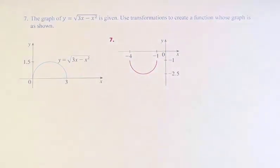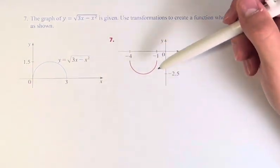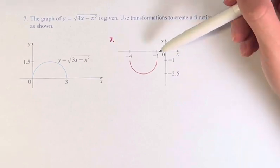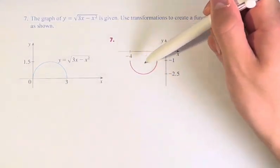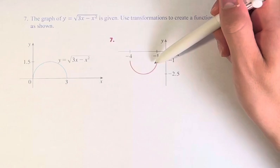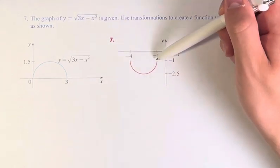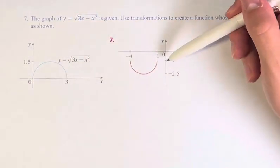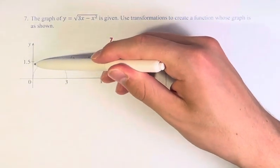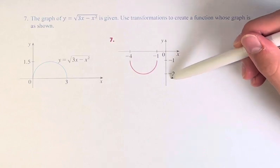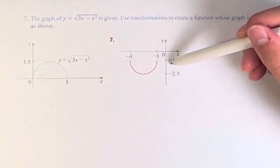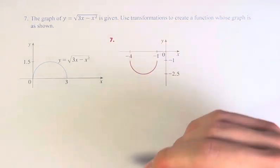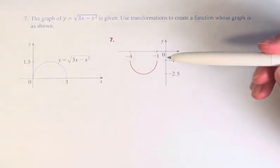So in looking for the transformations, we can see that it has not been stretched horizontally or vertically, or shrunk. The distance between the two furthest points on the x-axis is 3. From negative 1 to negative 4 is 3, just like 0 to 3 is 3. And vertically, 0 to 1.5 is 1.5 units. Negative 1 to negative 2.5 is 1.5 units. So we can rule out any stretches or shrinks.